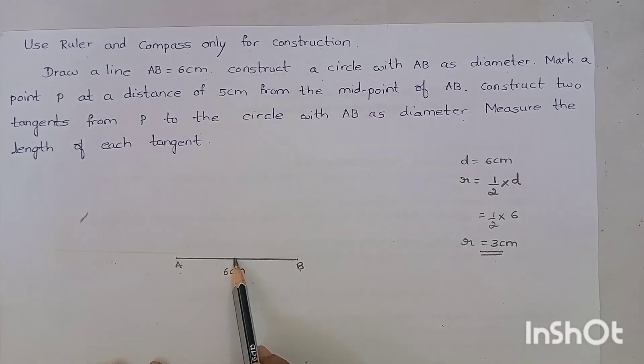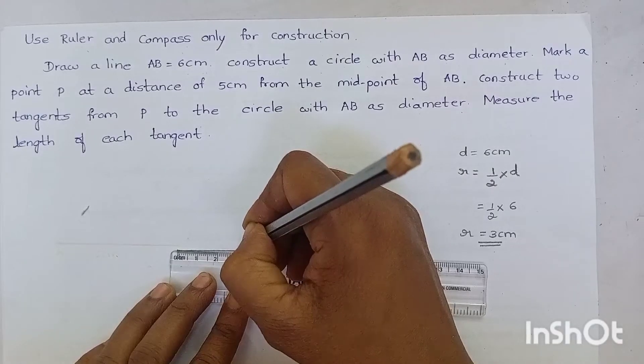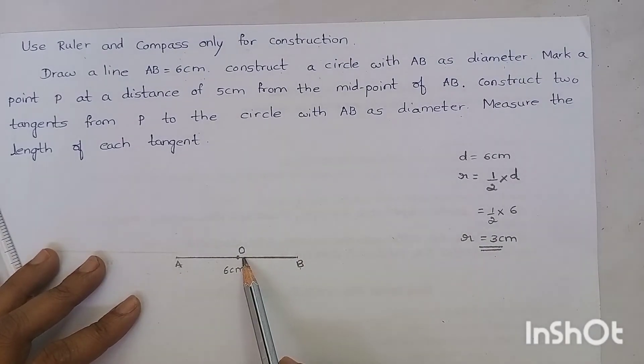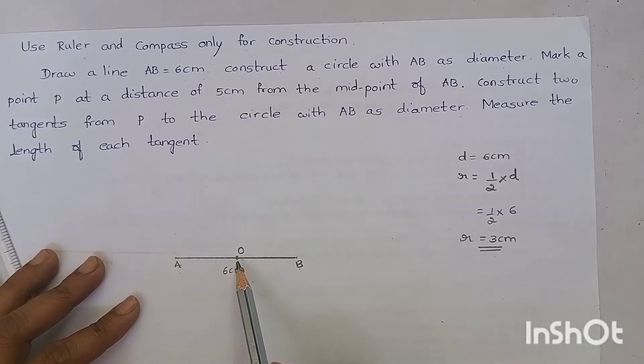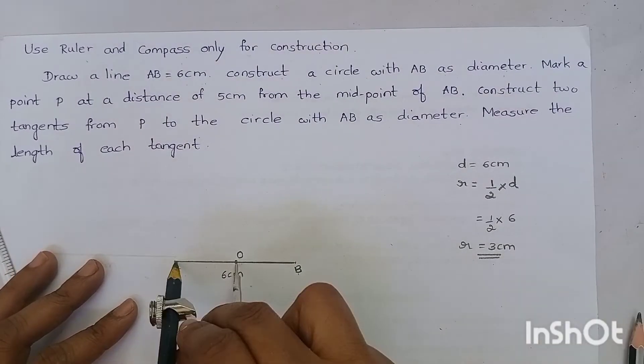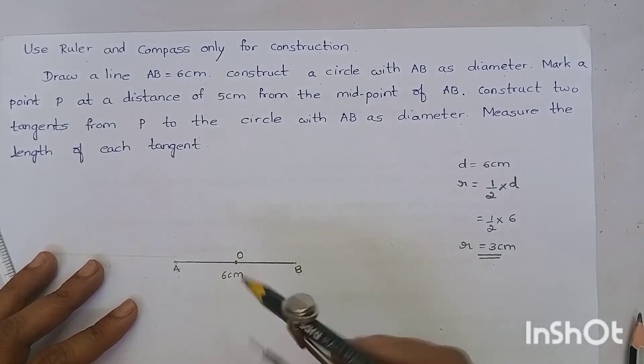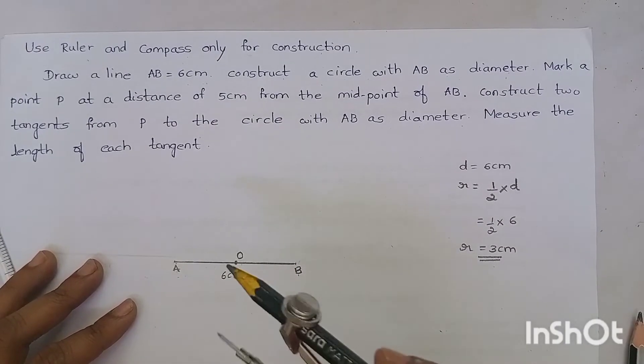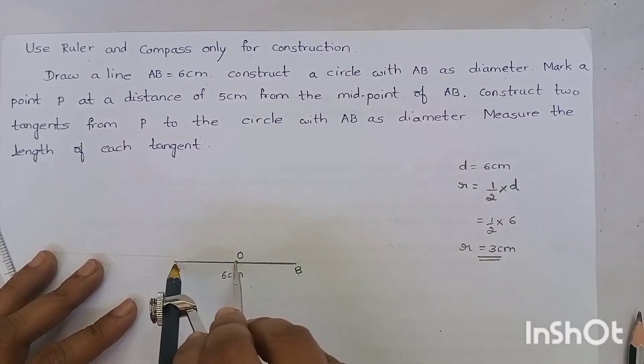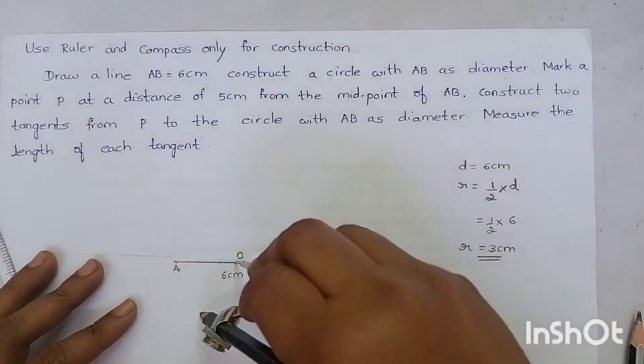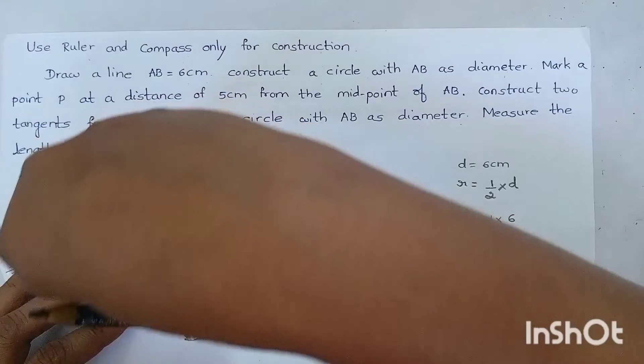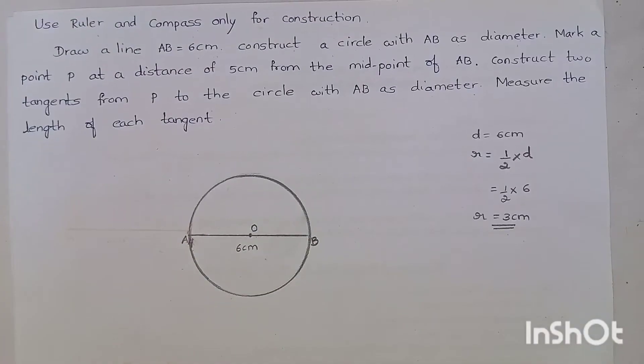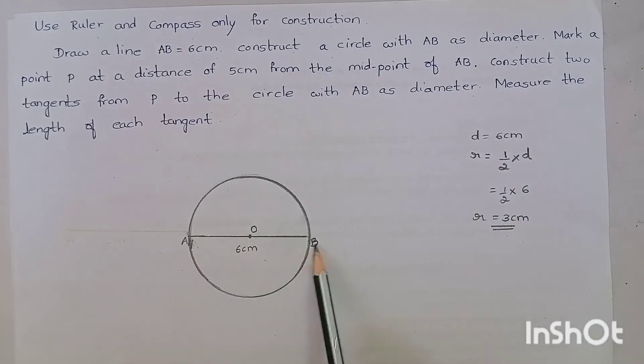So, let's mark 3 cm. Let me name it as O. O is the midpoint of the circle. Keeping AO as radius, let's draw a circle. See here, keeping AO as radius or OB as radius, we have to draw a circle. Here, keeping OA as radius, yes, I am constructing a circle. We have constructed a circle with AB as diameter.